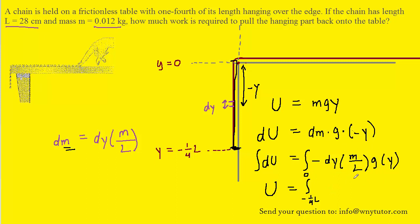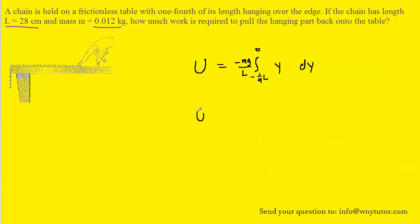We rearrange the equation, placing dy conventionally at the end of the integral. The quantity M over L times g is a constant — we know the total mass, the total length, and g is always constant — so we remove it outside the integral. We also remove the negative sign outside the integral, leaving y inside. We are now prepared to evaluate the integral. The integral of y is y squared over two, evaluated from negative one-fourth L to zero.